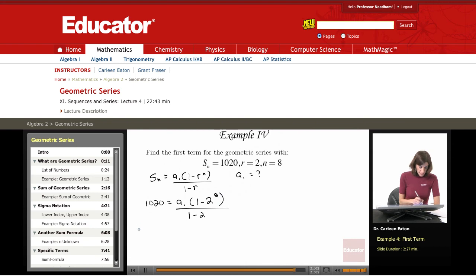This is going to give me 1020 equals the first term times 1 minus... If you go through your powers of 2, you'll find that 2 times 2 is 4 times 2 is 8 times 2 is 16 times 2 is 32. So 2 to the 5th equals 32.